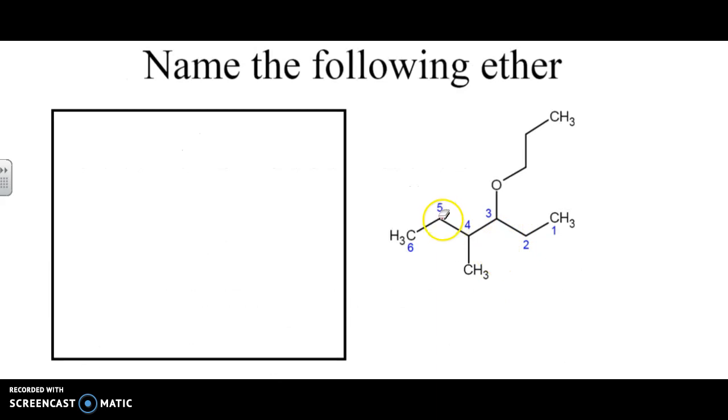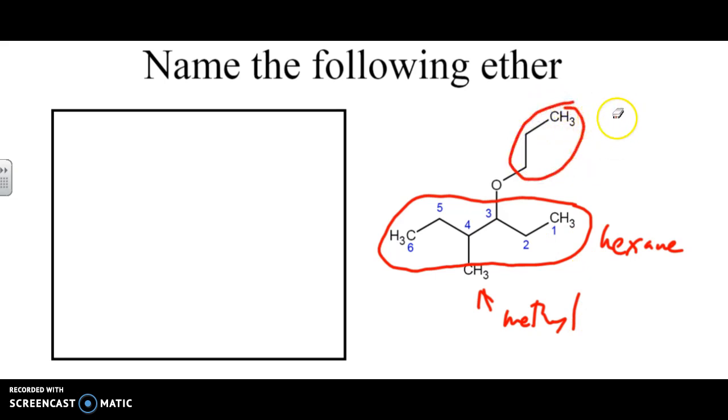So let's go through this right here. We can see that this piece right here is going to be our main chain. So the main chain is going to be a hexane. We can see the spot right here. At spot four, we've got a methyl group. We can see right here, this is going to be three carbons, so therefore this is going to be a propoxy.